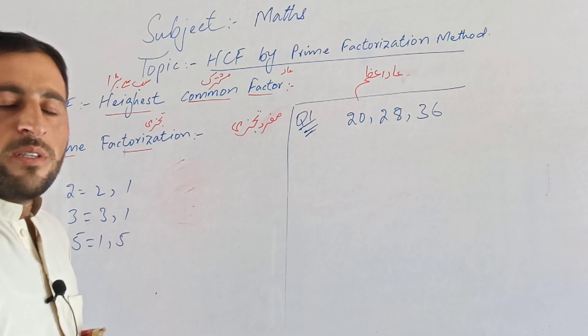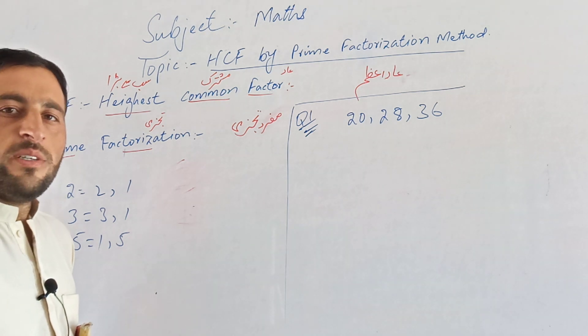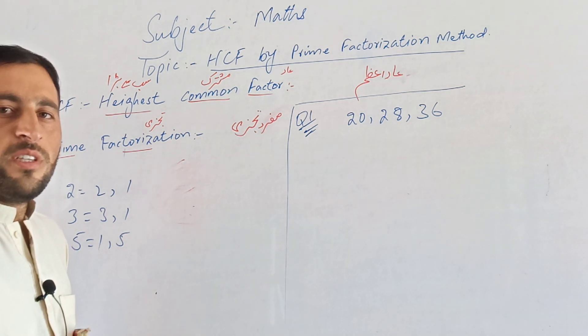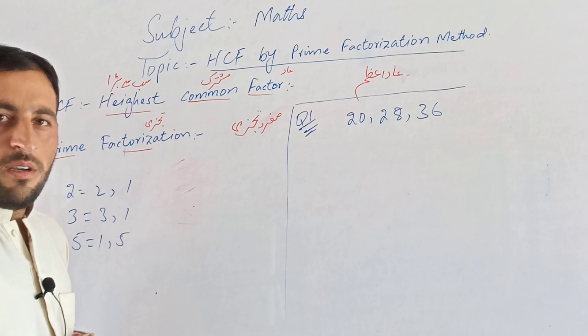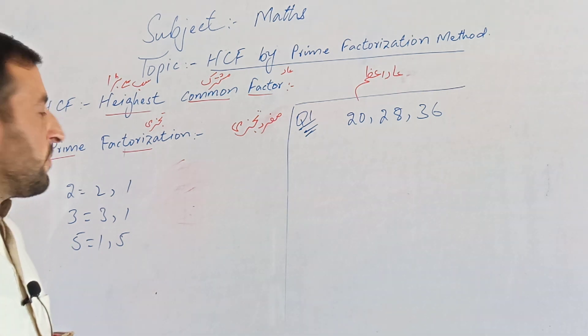The prime numbers include: five, seven, eleven, thirteen, seventeen, nineteen, twenty-three, twenty-nine, thirty-one, and so on.